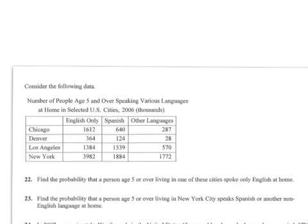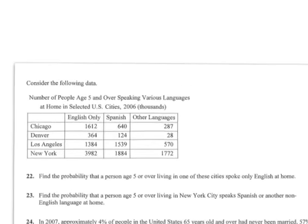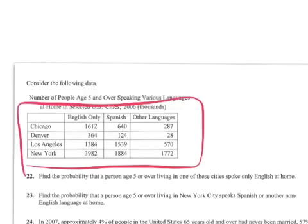Okay, in this last problem we're back to our various speaking languages of these four cities. They want us to find the probability that a person aged five or over living in one of these cities spoke only English at home. So if anyone in one of these cities, so all the cities are right here.